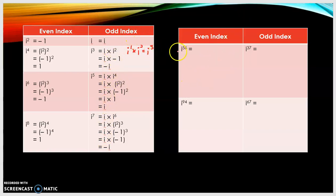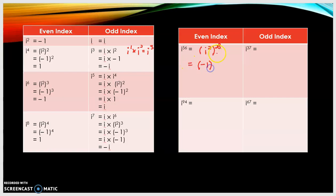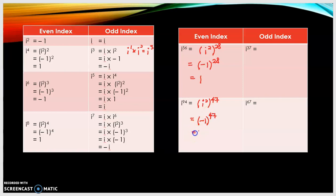Now let's look at four examples. For i to the power of 56, this is an even index, so we change it to (i²) to the power of 28, because 2 times 28 is 56. Since i² equals negative 1, we get negative 1 to the power of 28, which is positive 1. For i to the power of 94, also even, we write (i²) to the power of 47, since 94 divided by 2 is 47. So negative 1 to the power of 47 is negative 1.